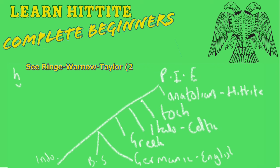Linguists were able to reconstruct this tree by looking at the daughter languages. In the beginning they specifically focused their attention on Greek, Sanskrit and Latin. By observing that these languages were similar in many ways in terms of grammar and vocabulary, they also noticed one key similarity: a process called Ablaut.